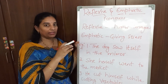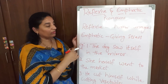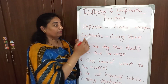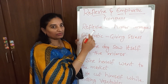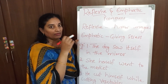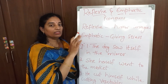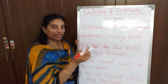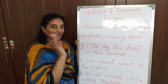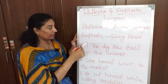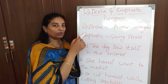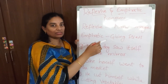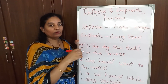By definition, reflection means mirror image. We use a reflexive pronoun in a sentence when we want to say that both the subject and object are one and the same — the doer of the action and the receiver of the action are one and the same. We use emphatic pronouns when we want to emphasize on the noun mentioned in the sentence, giving some extra stress on it.